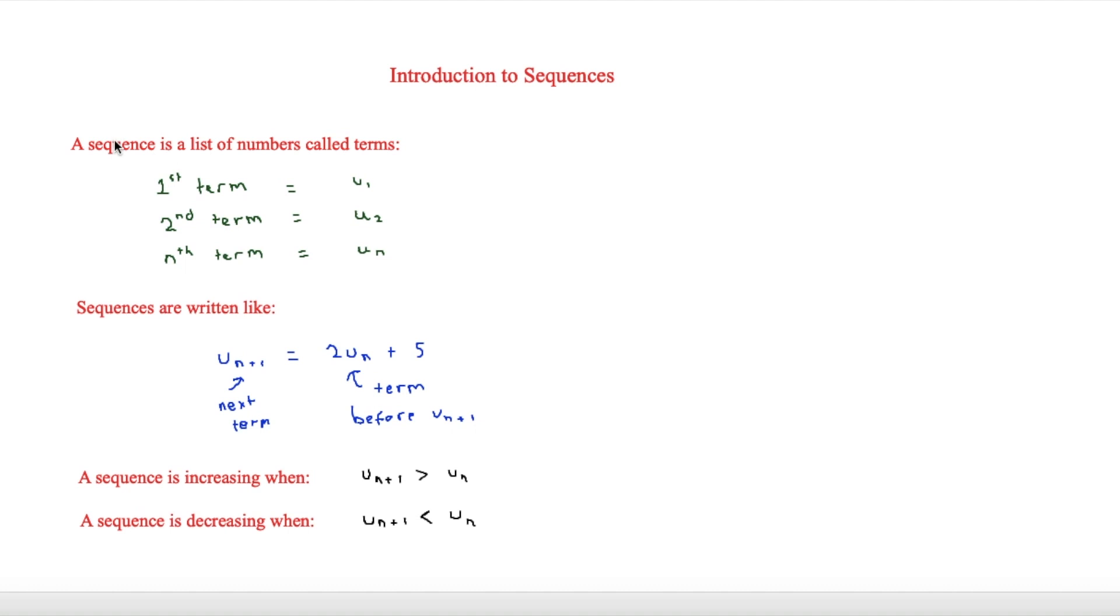So firstly, a sequence is simply a list of numbers called terms. And when we get to A level, we start using the notation u1, u2 and un. The first term is u1, the second term is u2 and any nth term is un.